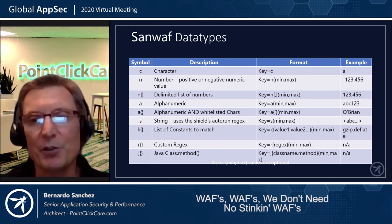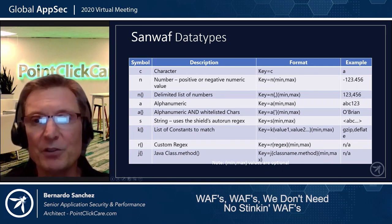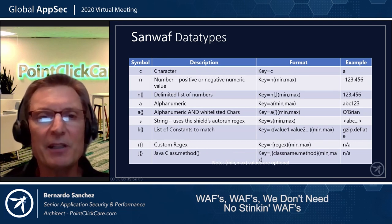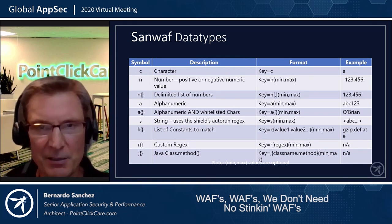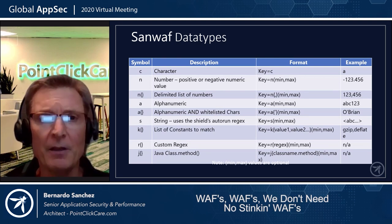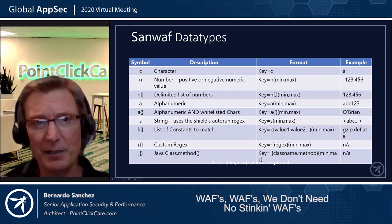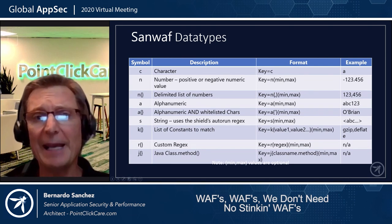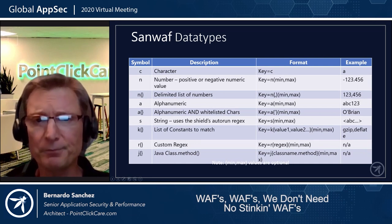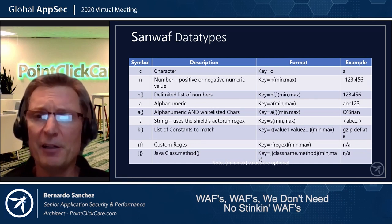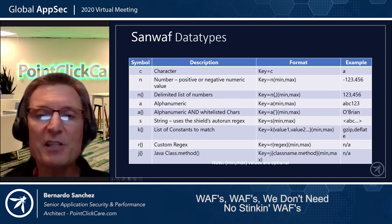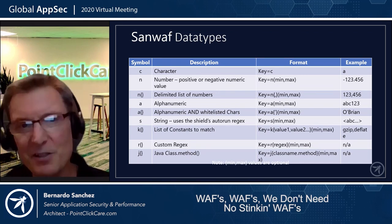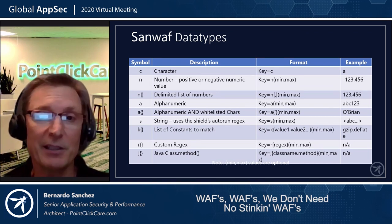Next is a delimited list of numbers — for example, '1,2,3,4,5,6' — where the parameter is expected to be a comma-delimited list of numbers. Then there's alphanumeric — all alphabetic and numeric characters allowed. Next is alphanumeric and whitelisted characters, a very powerful data type. For example, 'O'Brien' is alpha but has a special character — the single quote apostrophe. This allows you to expand the scope of alphanumeric to include specific whitelisted characters.